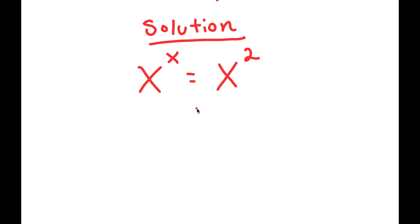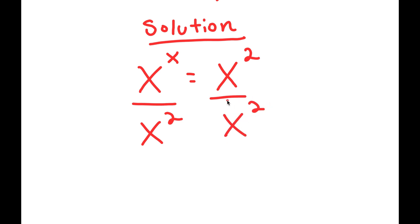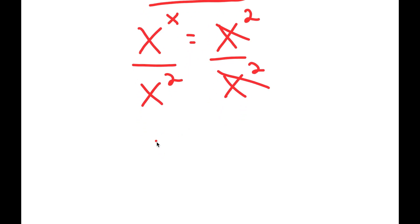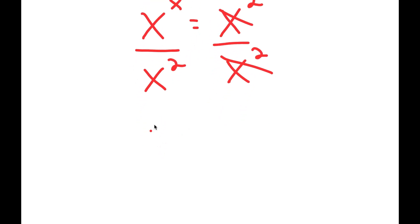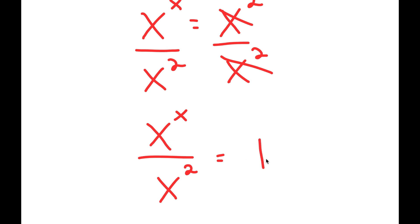I'm going to first start by dividing both sides by x to the power of 2. So I have x to the power of x over x to the power of 2 is equal to x to the power of 2 over x to the power of 2. And x to the power of 2 — these two cancel out. So now I'm left with x to the power of x over x to the power of 2 is equal to 1.